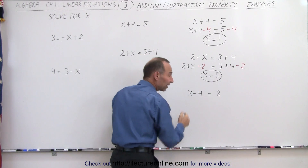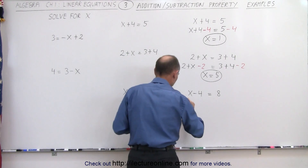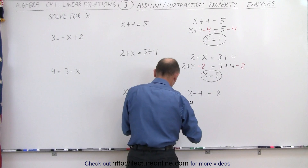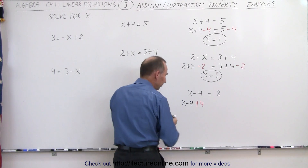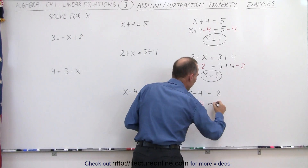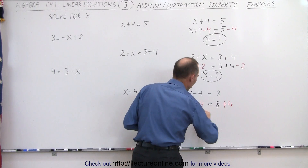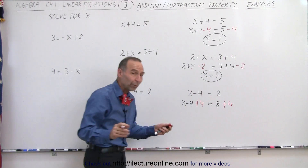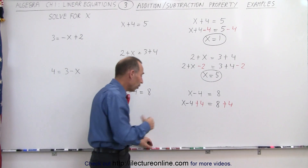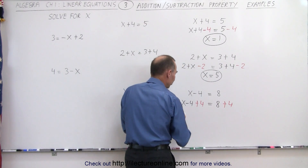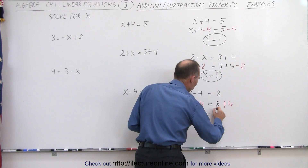Over here we have a minus 4 on the left side, we want to get rid of that, so we're going to add a 4 to the left side. So we end up with x minus 4, then plus 4. If we're going to add a 4 to the left side, we must also add a 4 to the right side. We do exactly the same thing to both sides of the equation, otherwise the equation is no longer the same. So minus 4 plus 4 goes to 0, we end up with x is equal to 8 plus 4, or 12.